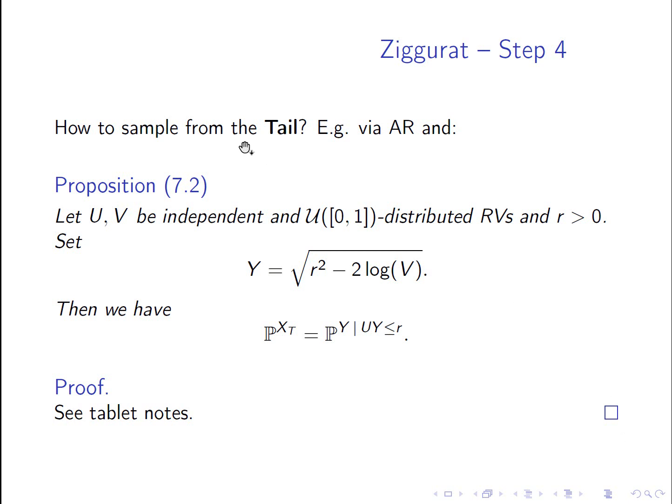So what remains is to sample from the tail and to sample from the base. So how to sample from the tail? Well, we can do this for example via accept and rejection sampling. And there are several options and proposition 7.2 gives one. So u and v are independent and uniformly on [0,1] distributed random variables and r is still our cutoff parameter. So what's our proposal random variable? This is y, so y is the square root of r squared minus 2 log v.